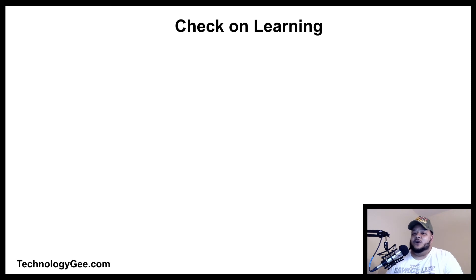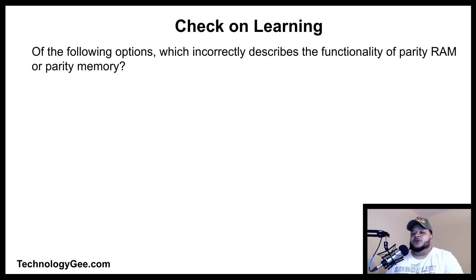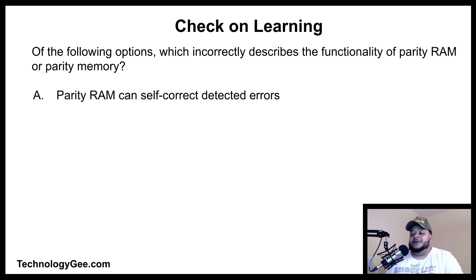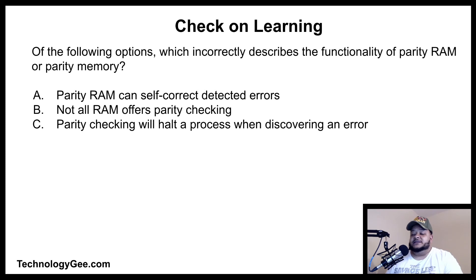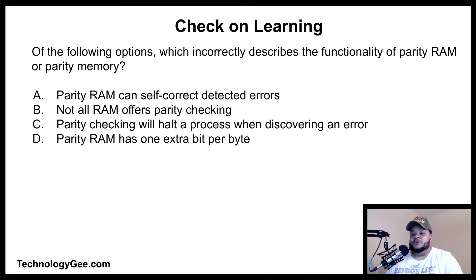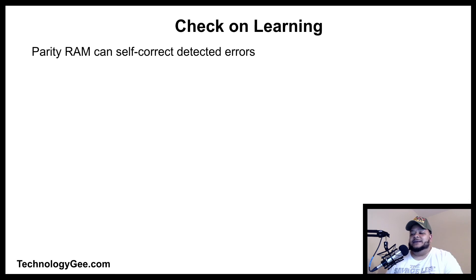Check your learning — Question 1: Which of the following incorrectly describes the functionality of parity RAM? Options: parity RAM can self-correct detected errors; not all RAM offers parity checking; parity checking will halt a process when discovering an error; or parity RAM has one extra bit per byte. The correct answer is 'parity RAM can self-correct detected errors' — this is not a correct statement. Parity can warn you about errors but cannot correct them.